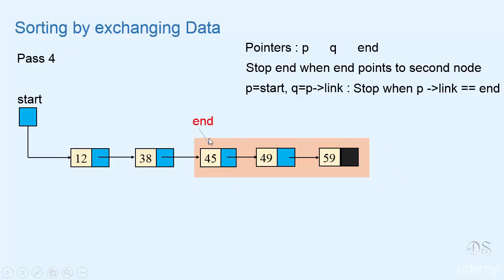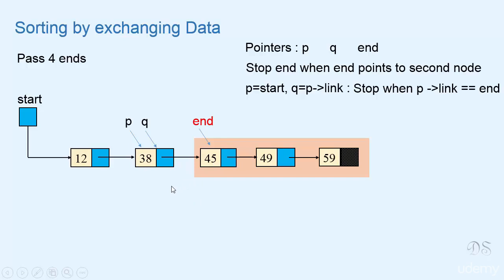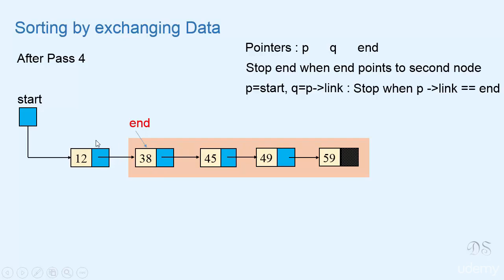In pass four, end will point to this node. We'll initialize p with start and q with p-link. We'll compare — there's no need of swapping. We'll move p. Now p-link has become equal to end. This is the end of pass four and at the end of pass four this portion has become sorted. After pass four, end will point to this node so we'll stop. The whole list has become sorted after four passes.